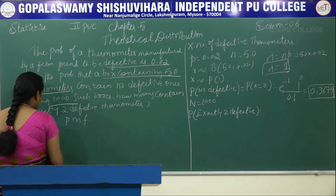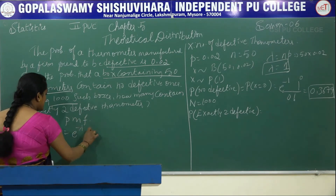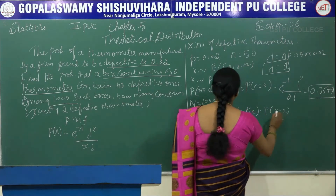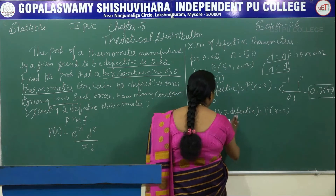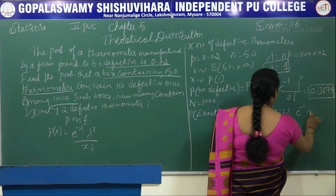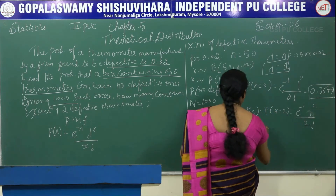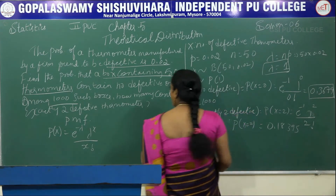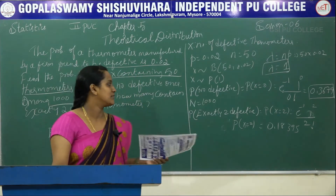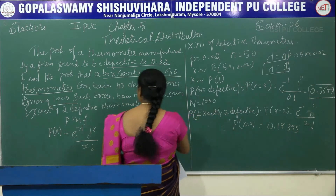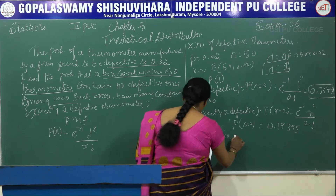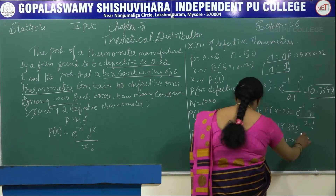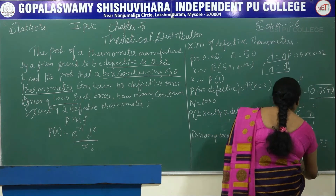The PMF is P(X) equals e to the power minus lambda, times lambda to the power x, divided by x factorial. For exactly two defectives, P(X=2) equals e to the power minus 1 times 1 to the power 2 divided by 2 factorial, and this is 0.18395. Among 1000 boxes, since they are asking for numbers, we multiply this probability by the capital N value. So 0.18395 multiplied by 1000 gives 183.95, or approximately 184.